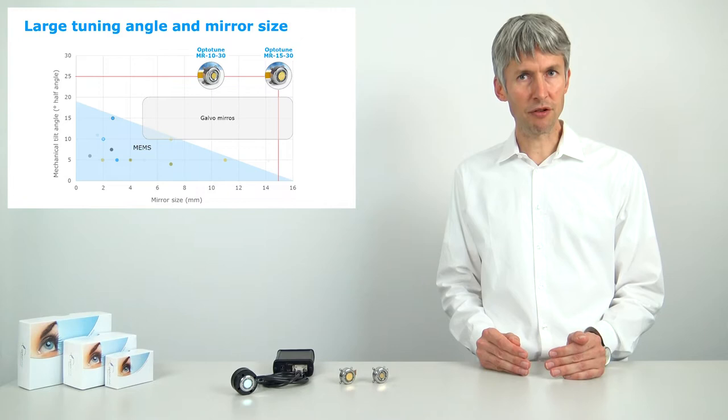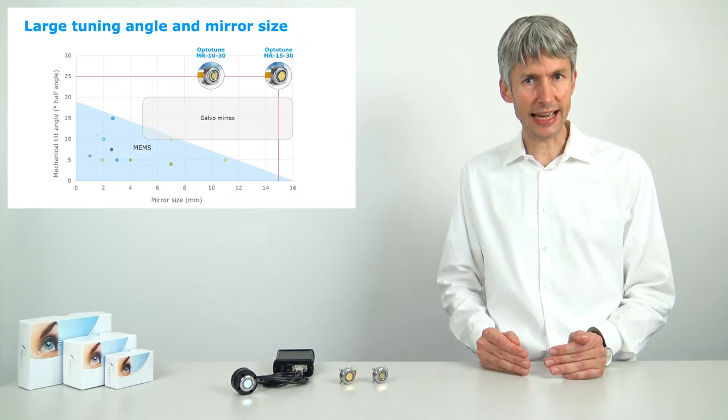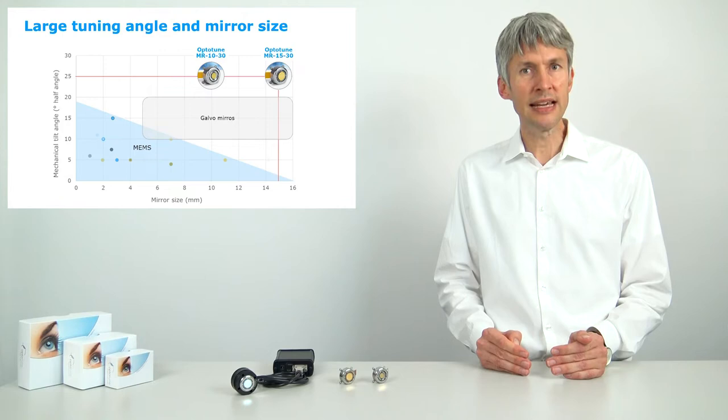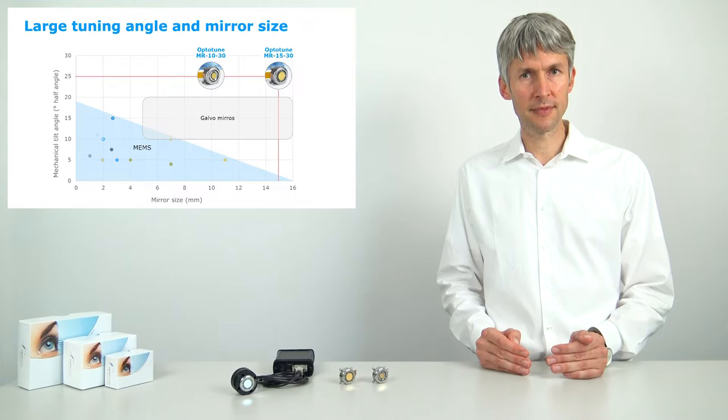When plotting different commercially available 2D MEMS mirrors along the axis of mirror size and tilt angle, one quickly sees that they are in the lower left corner. Either they are limited in tilt angle or mirror size.